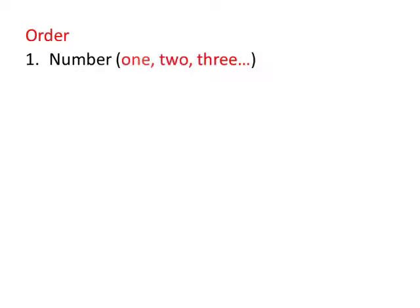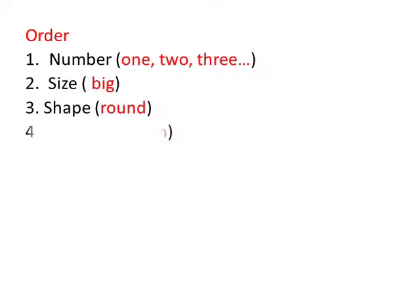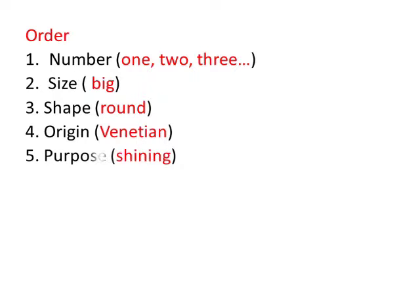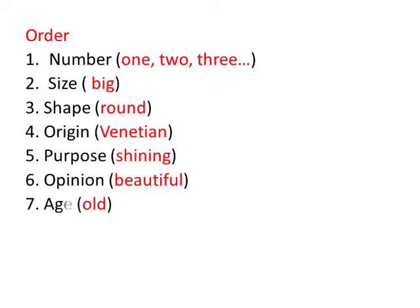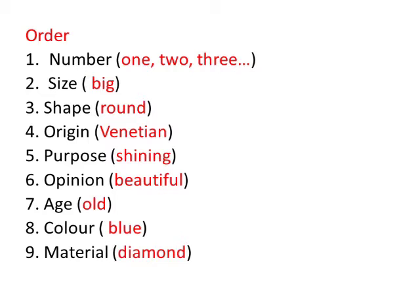The order of adjectives is as follows: Number, Size, Shape, Origin, Purpose, Opinion, Age, Color, and Material.